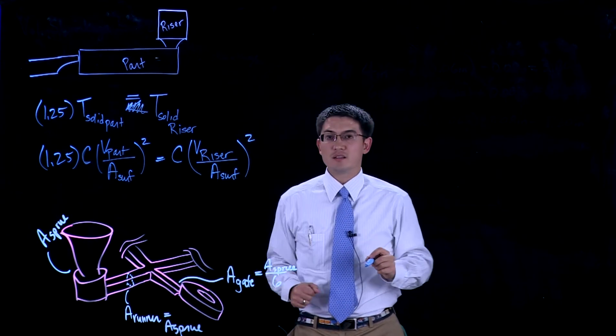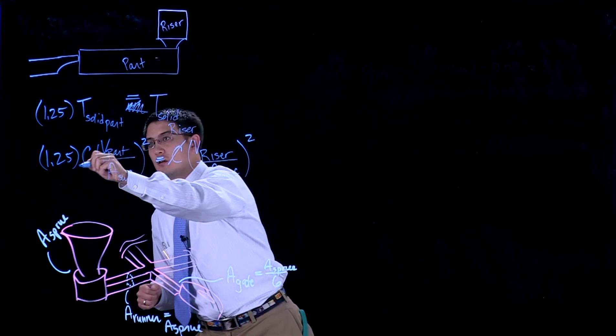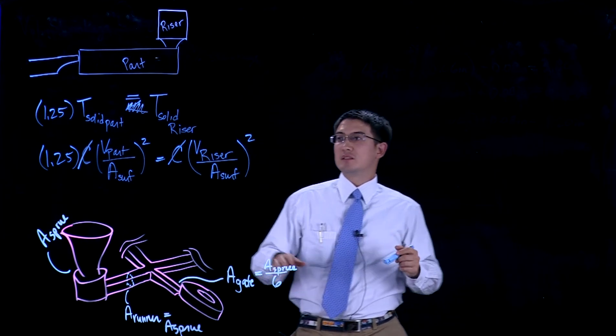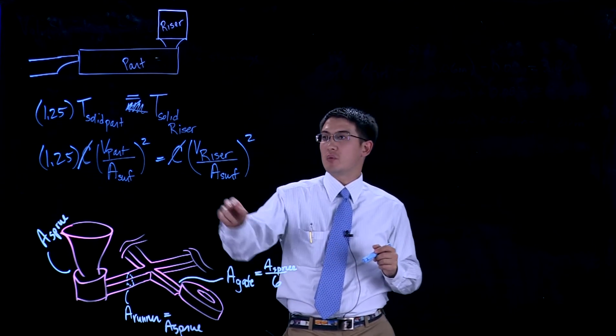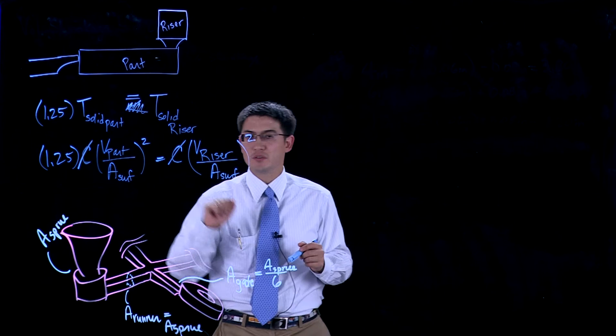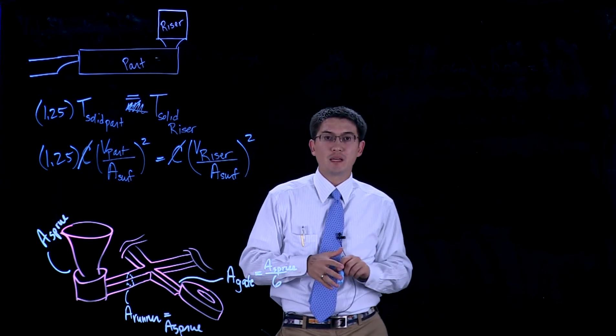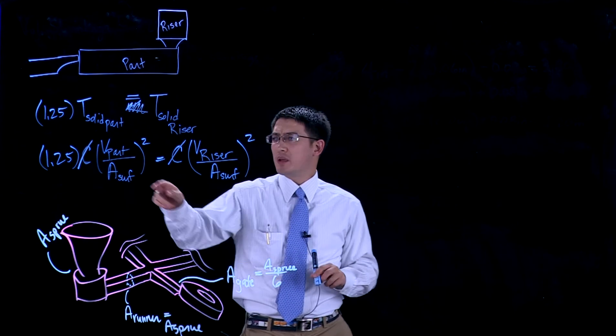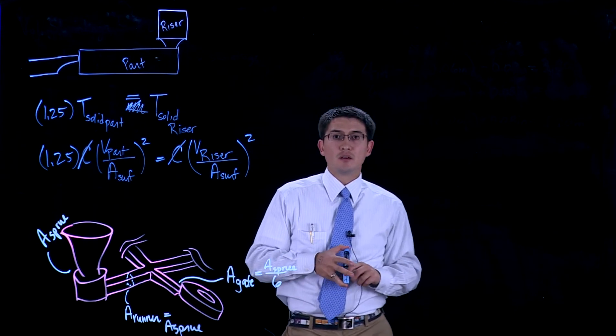Now since this is in the same mold, the mold constants cancel. This gives us a way to calculate. If we have a volume of our riser, surface area of our riser, volume of our part, surface area of our part, we can now begin to find out the exact dimensions of this. We can calculate the dimensions of our part.